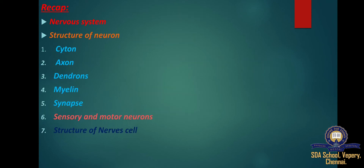In the previous section we saw about the nervous system. The nervous system is a network of specialized cells called nerve cells or neurons that act as a communication link between various parts of the body. It has two major components: the central nervous system and the peripheral nervous system. The central nervous system is the primary control center consisting of the brain and spinal cord. The peripheral nervous system is a network of nerves that connect the rest of the body to the central nervous system.